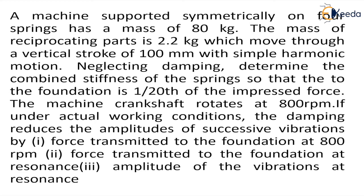The question says that there is a machine that is supported symmetrically on four springs, which means springs are in parallel. The mass of the machine is given as 80 kg. The mass of the reciprocating parts is given as 2.2 kg, which move through a vertical stroke of 100 mm with simple harmonic motion. The rotating speed N is given as 800 rpm.